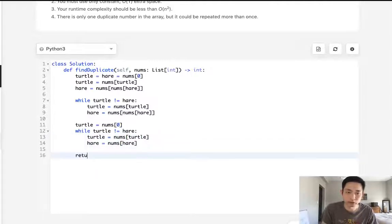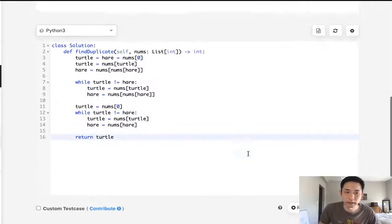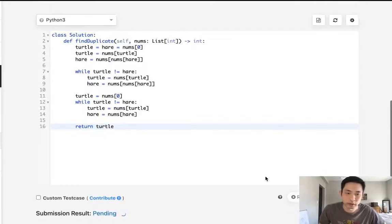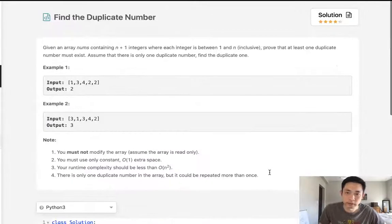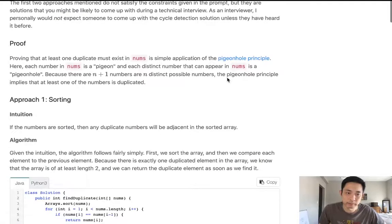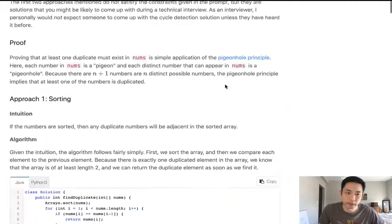And we do the same algorithm, except we're going to move the turtle and hare just one position now. After that, we can just return either turtle or hare. And we'll just return turtle. And that should solve our problem. So that does get accepted. Now, I want to look at the solution in a little bit more detail.